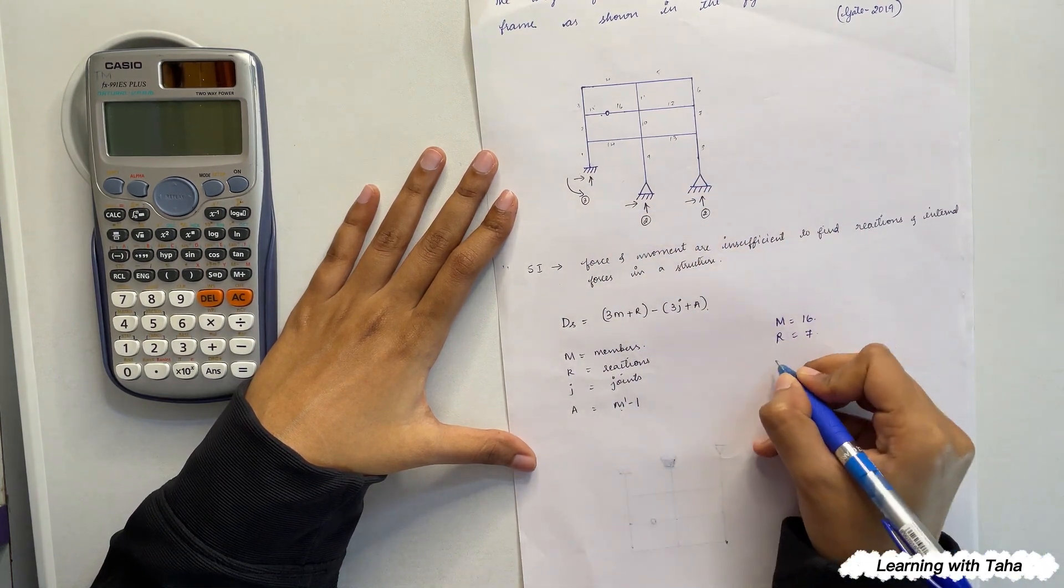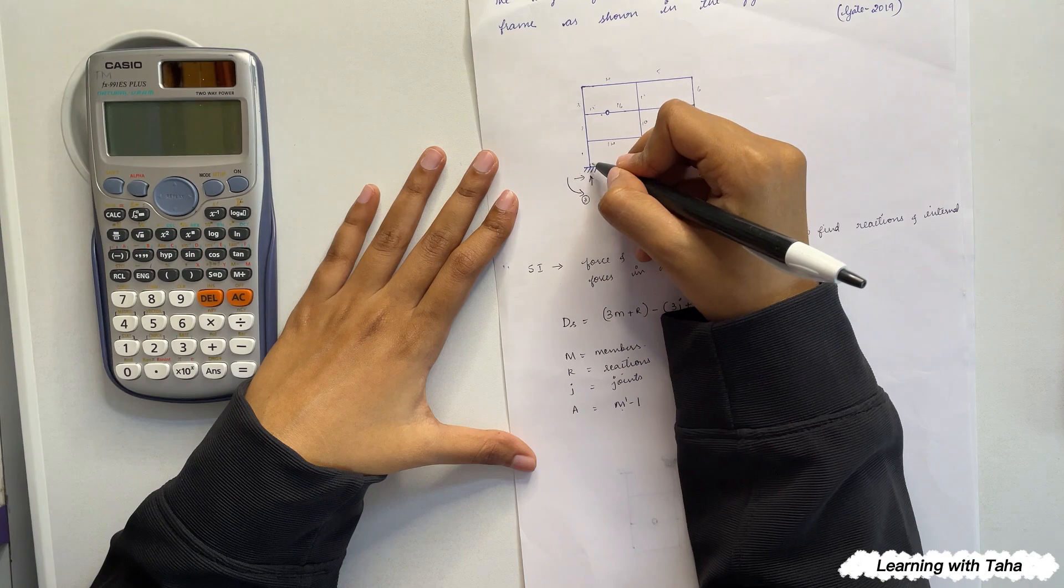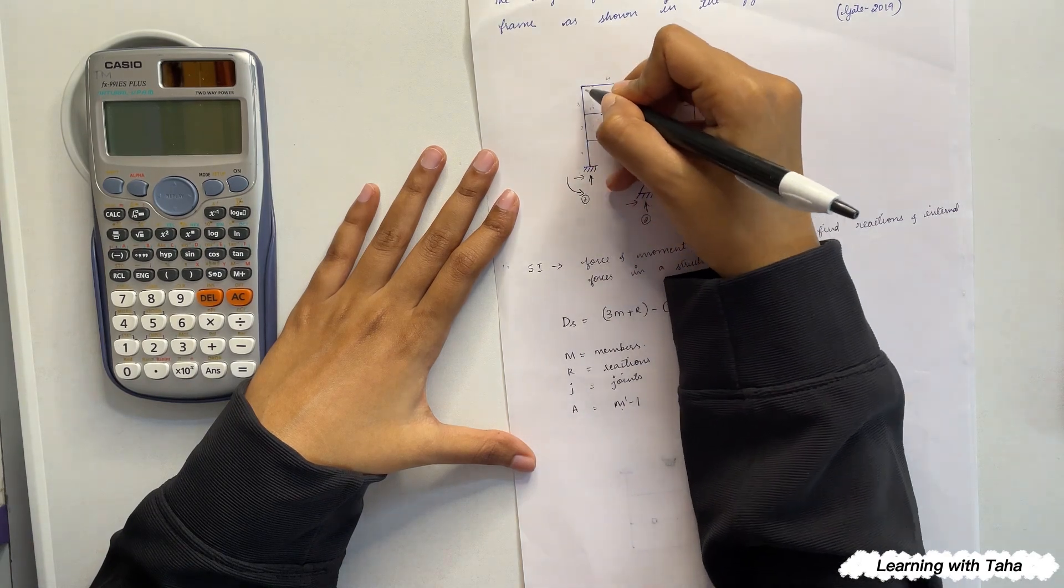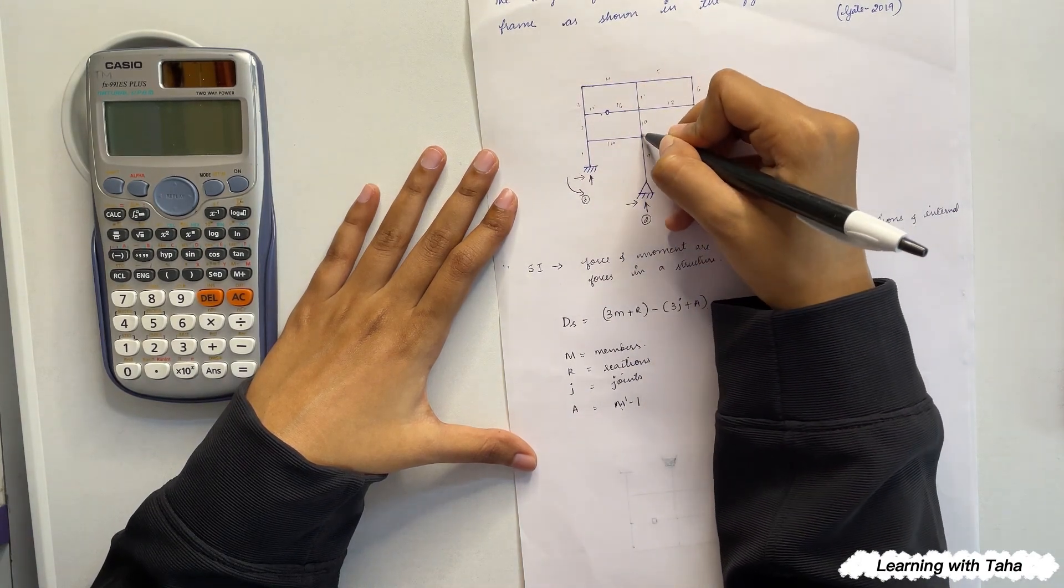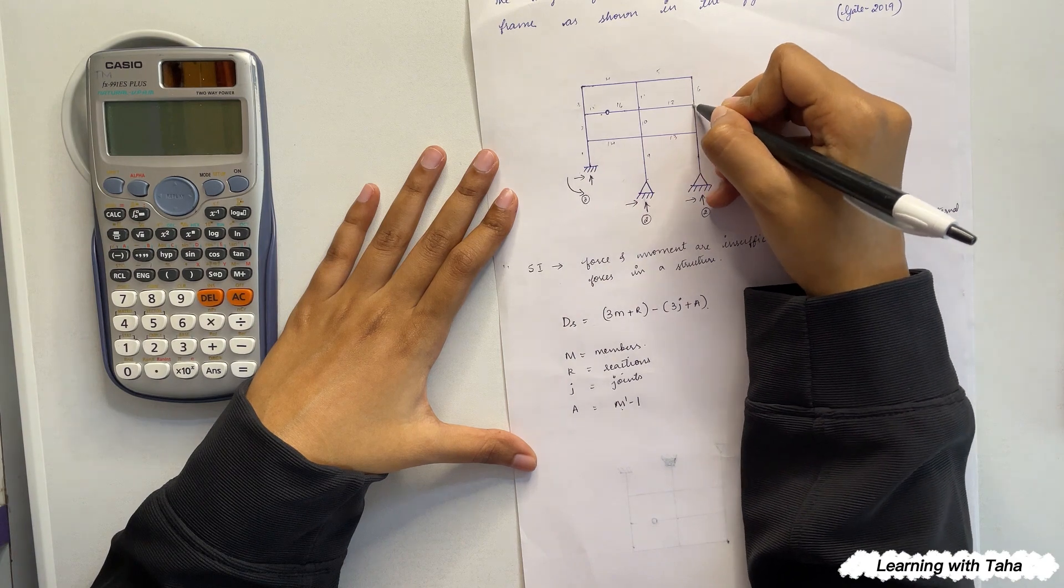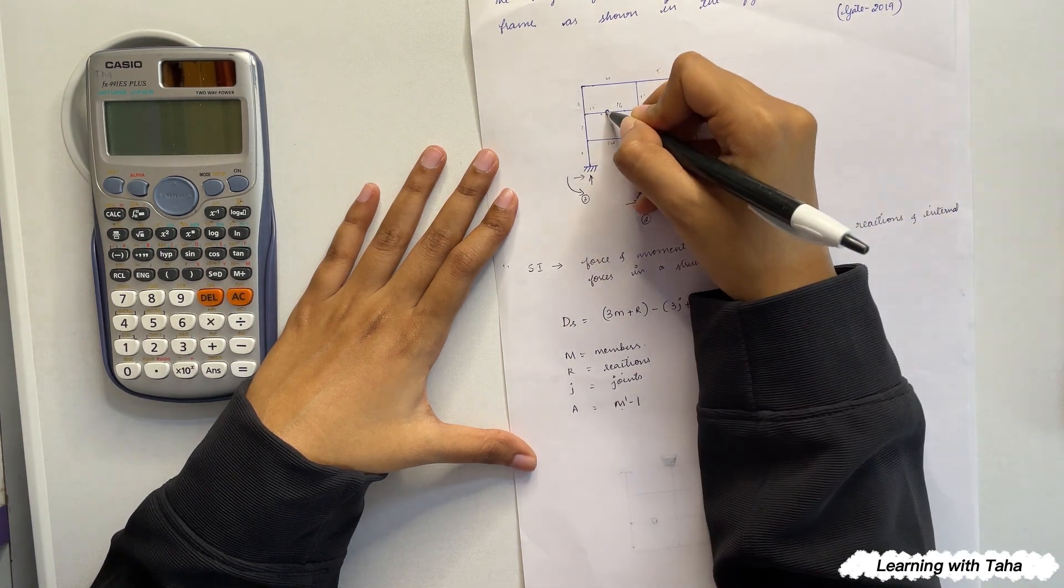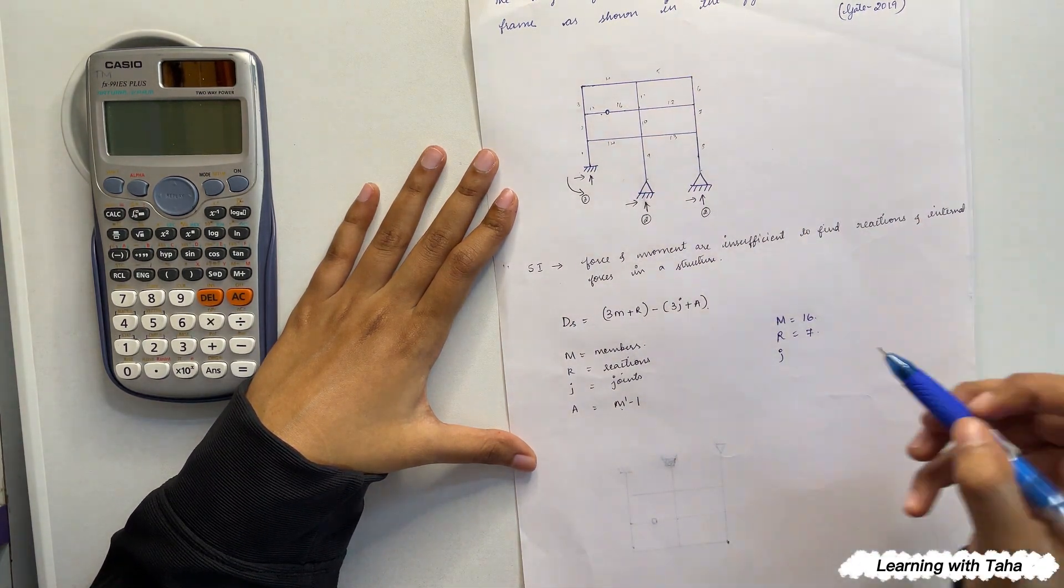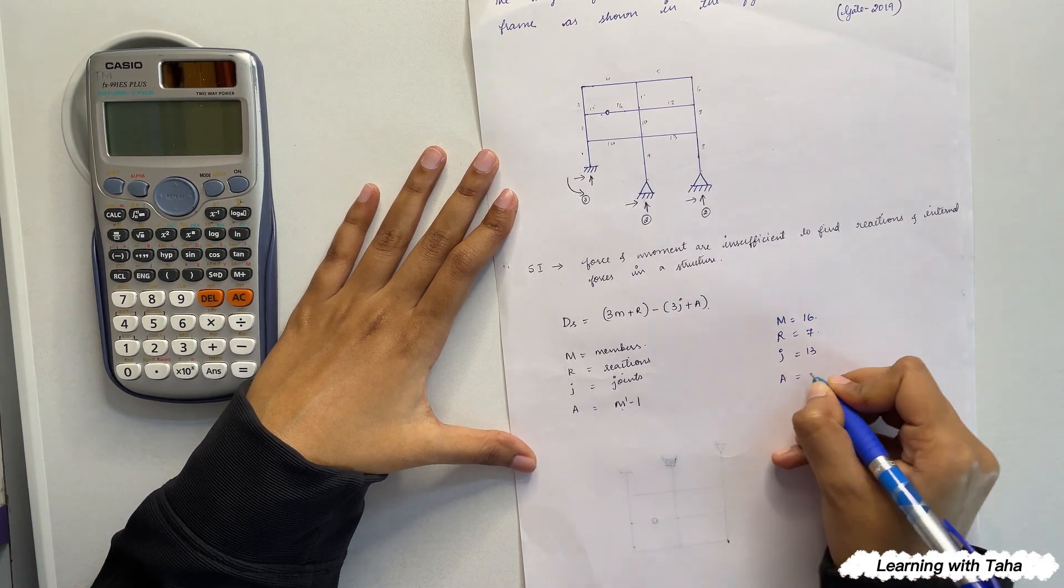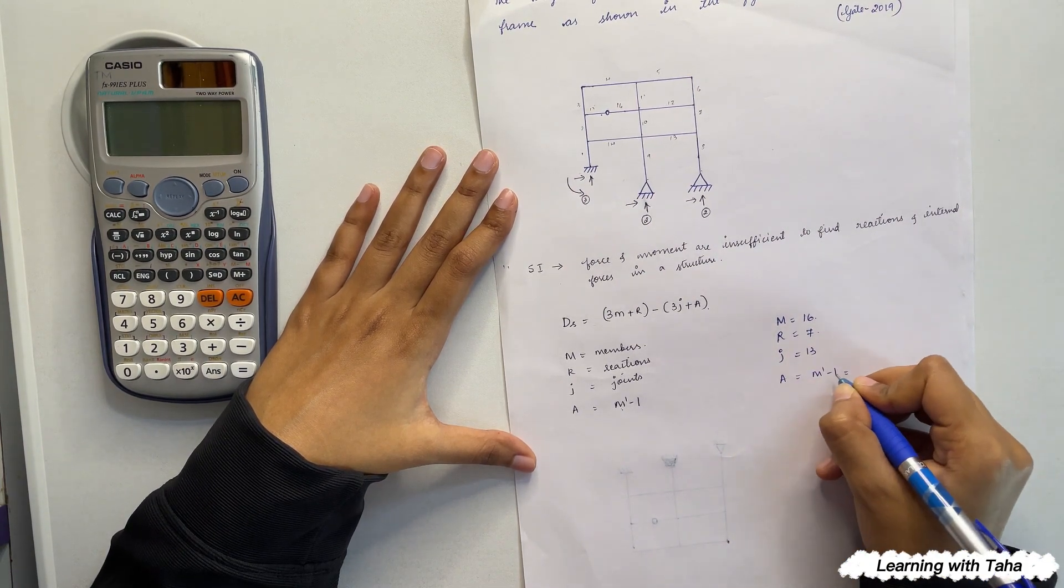So the number of joints: this is one, two, three, four, five, six, seven, eight, nine, ten, eleven, twelve, thirteen. So the number of joints are thirteen. And a equals m dash minus one, which is nothing but...